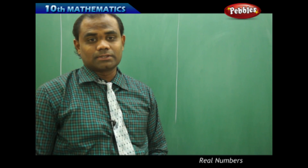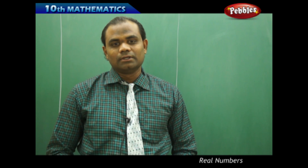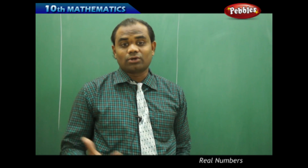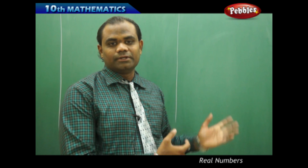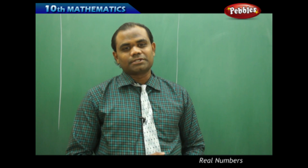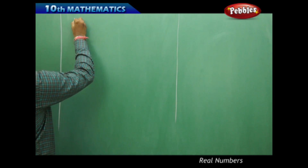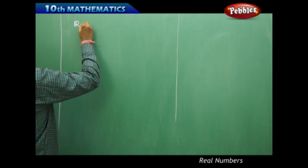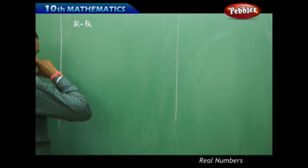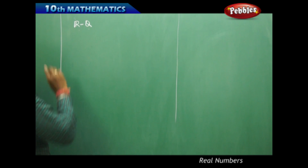Let's recap irrational numbers and discuss how we can identify a number to be irrational or rational, supported through some theorems and properties. An irrational number is a number which is not rational. When discussed within the real number system, these are numbers which cannot be expressed in the form p/q where p and q are integers and q is not equal to zero. Mathematically, irrational numbers are denoted as all real numbers excluding the rational numbers.